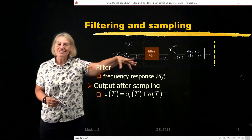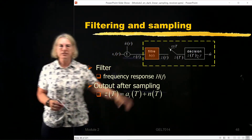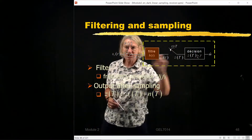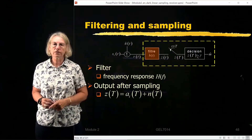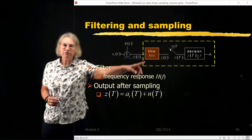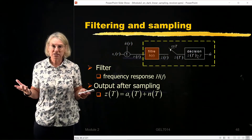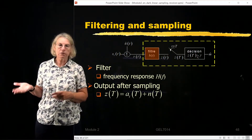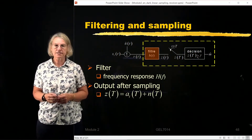Here again is the block diagram for the linear sampling receiver — three steps: filter, sampling, and then the decision. We've covered the decision strategy and what to use for the threshold. Now we're going to be focusing on the filter instead. So what frequency response should we use? We've looked before in the time domain, but we're going to be looking in the frequency domain for this part of the analysis.